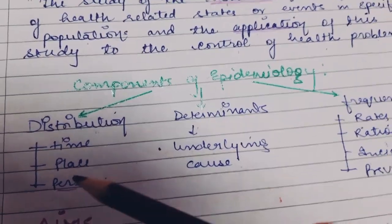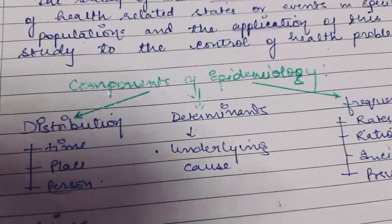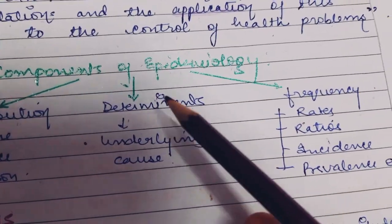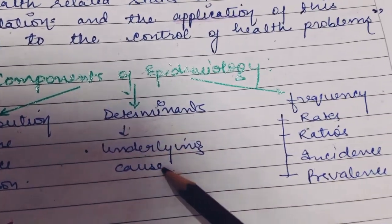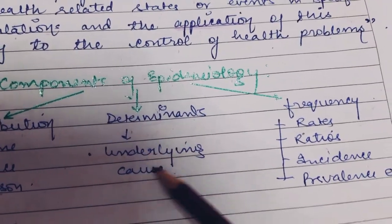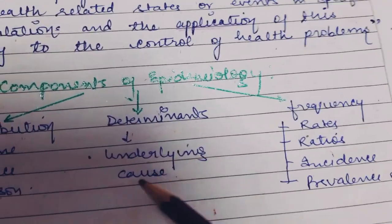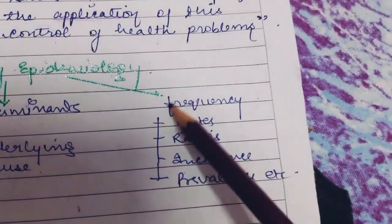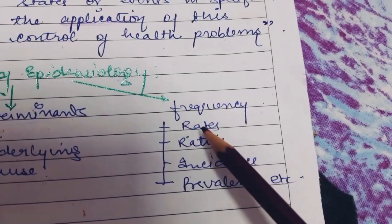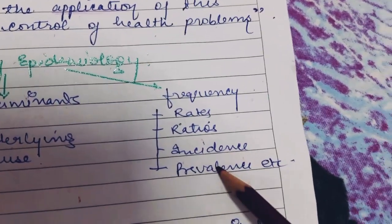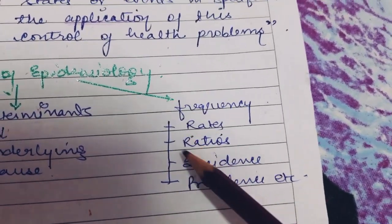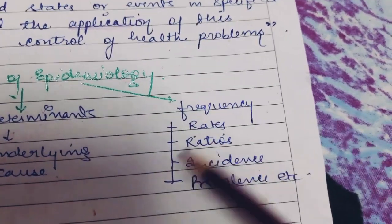Determinants mean what is the underlying cause, or what is the causative factor or risk factor of the disease. Frequency tells about what is the prevalence of the disease or what is the incidence of the disease — I'll be covering all this in further videos.